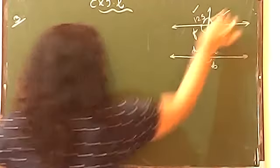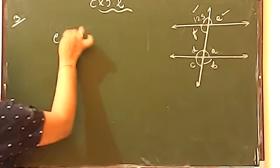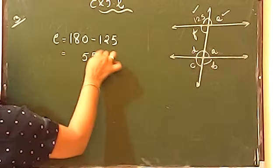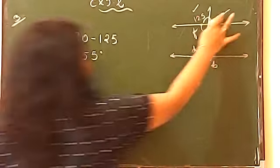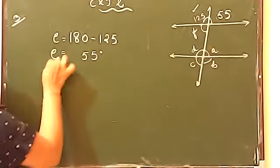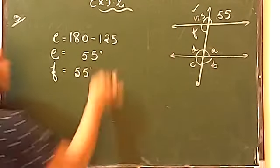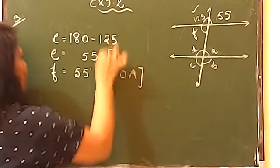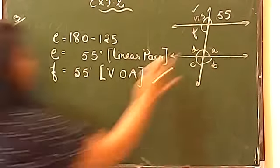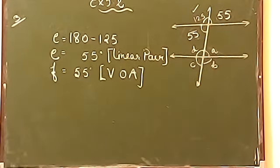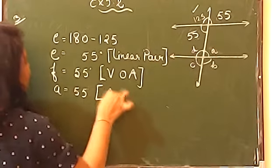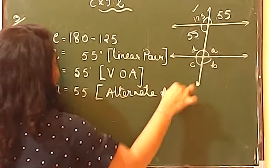Now, F and 55° are vertically opposite angles, so F equals 55° — reason: VOA (vertically opposite angles). Then A will also be 55° because of the alternate angle property. So we write A equals 55°, reason: alternate angles.